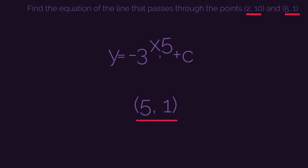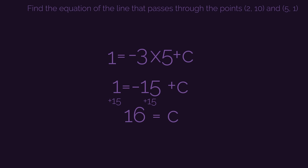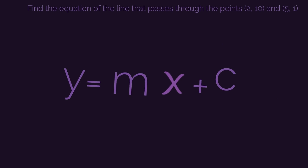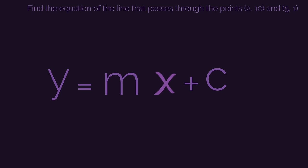So when x is 5, y is 1, so 1 equals negative 3 multiplied by 5 plus c. So 1 equals negative 15 plus c. A little bit of rearranging, add 15 to both sides, c equals 16.